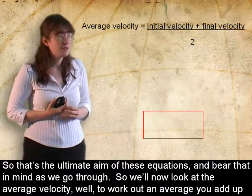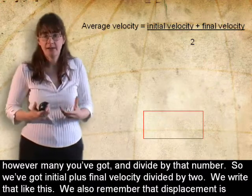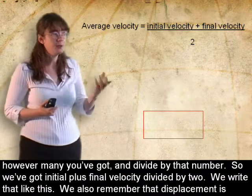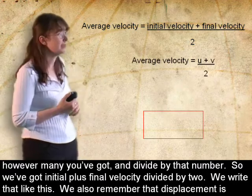So we'll now look at the average velocity. Well, to work out an average, you add up however many you've got and divide by that number. So we've got initial plus final velocity divided by 2. We write that like this.